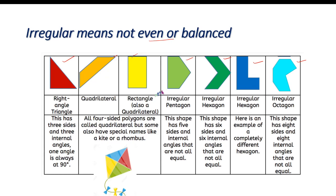Children, this is a rectangle and you all know all angles of a rectangle are 90 degrees. Opposite sides of a rectangle are equal, so this side is equal to this side and this side is equal to this side. All sides are not equal in this case, so all sides are not equal.